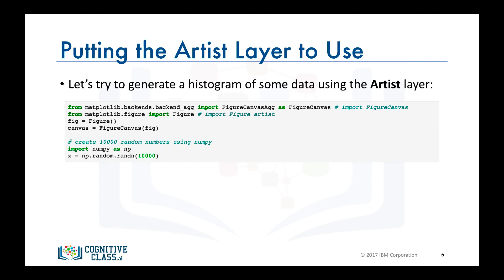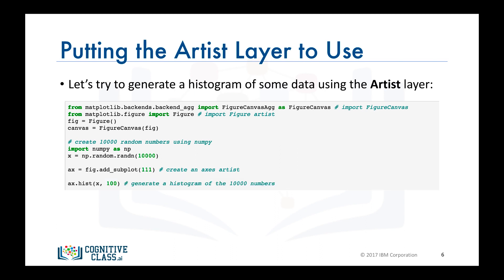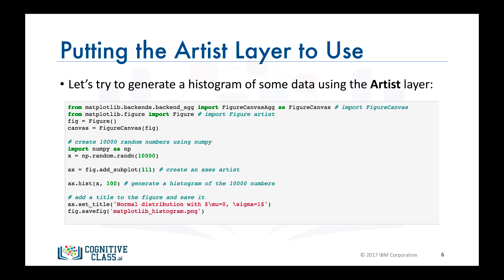Then we import the NumPy library to generate the random numbers. Next, we create an axis artist. The axis artist is added automatically to the figure axis container, fig.axes. Note that 111 is from the MATLAB convention — it creates a grid with one row and one column and uses the first cell in that grid for the location of the new axis. Then we call the axis method hist to generate the histogram. Hist creates a sequence of rectangle artists for each histogram bar and adds them to the axis container, where 100 means create 100 bins. Finally, we decorate the figure with a title and save it.